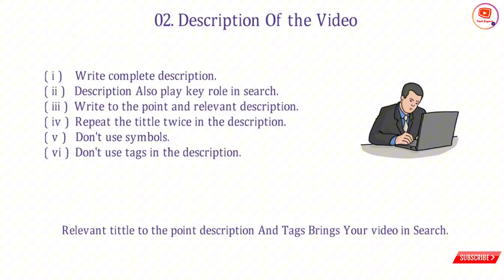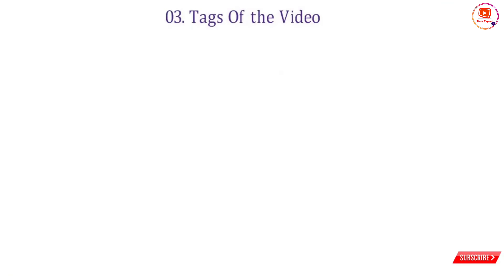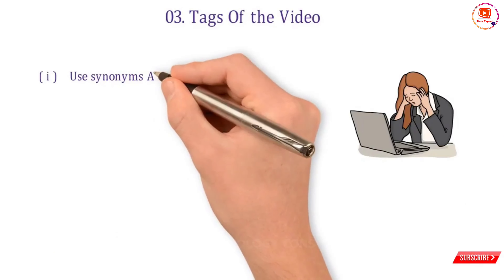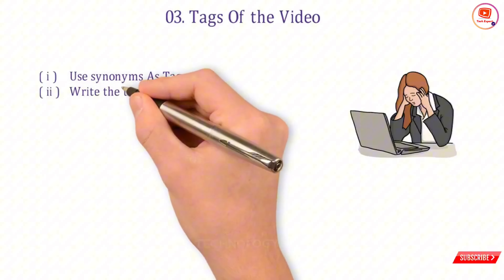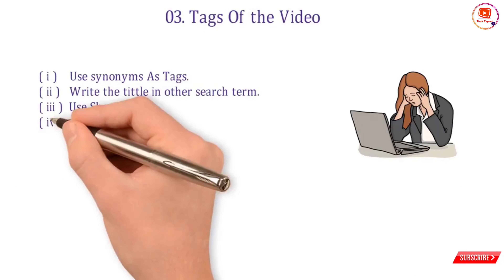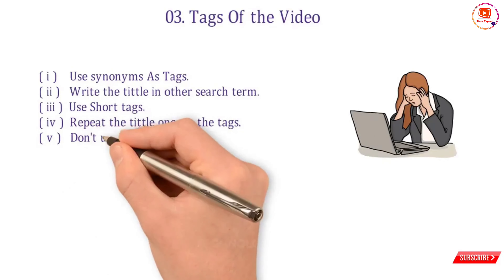Relevant title, to-the-point description, and tags bring your video into search. The search engine scans a file in this order: first it checks the metadata file name, then the title, third the description, then the tags, and then it shows the search result. Number three — tags of the video: tags always play a key role. You can write multiple types of tags. Use synonyms as tags, write the title in other search terms, use short tags, repeat the title once in the tags, and don't use symbols in the tags.